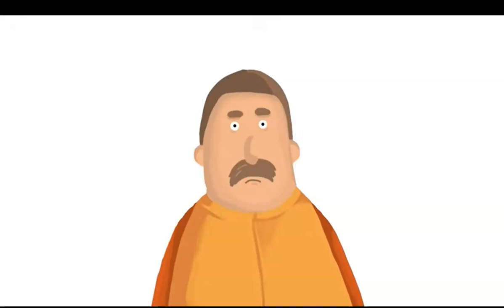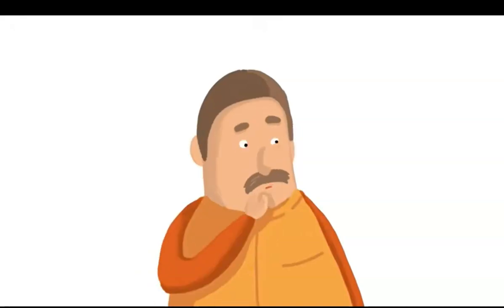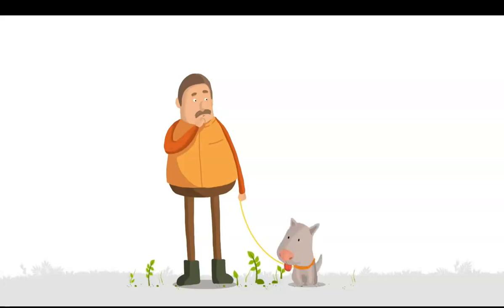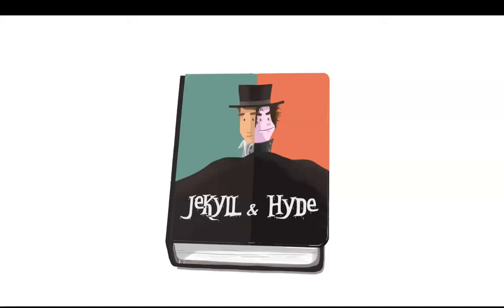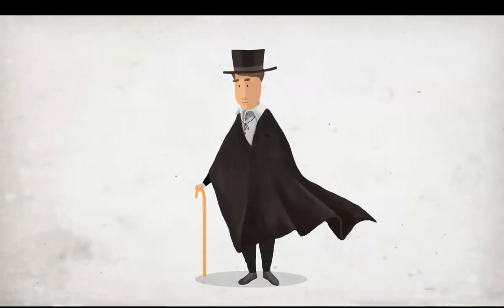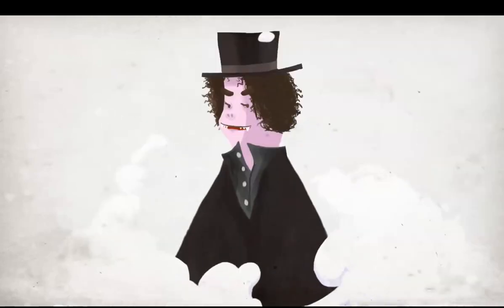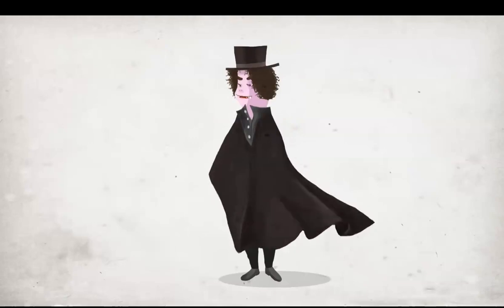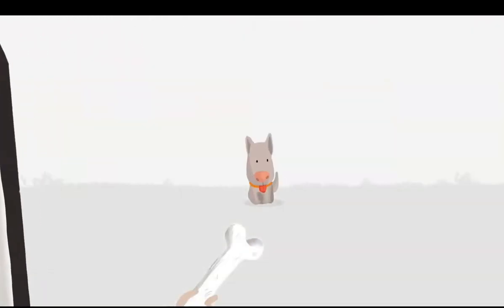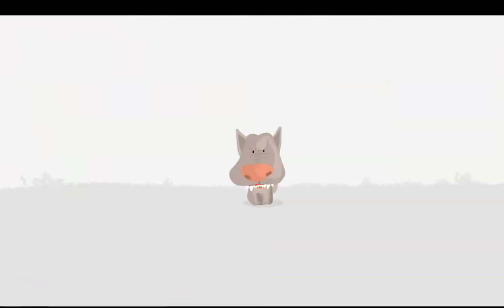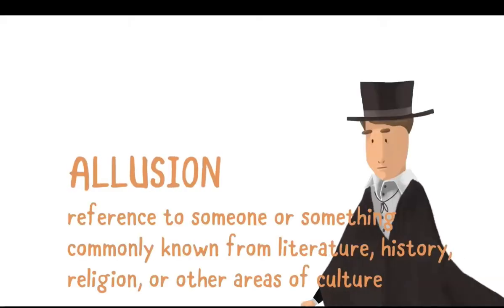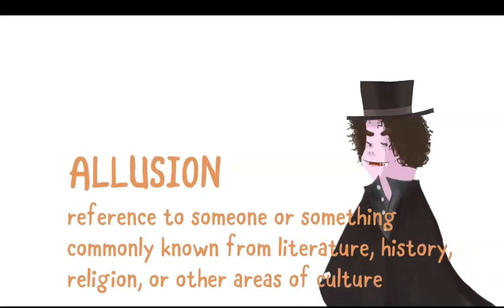Sometimes my dog is Dr. Jekyll, but other times he is Mr. Hyde. The man refers to this well-known character when describing his dog because Dr. Jekyll is kind and friendly, but sometimes he turns into Mr. Hyde, who is violent and evil. By referring to Dr. Jekyll and Mr. Hyde, the man can quickly illustrate his dog's personality. This is called an allusion — a reference to someone or something commonly known from literature, history, religion, or other areas of culture.